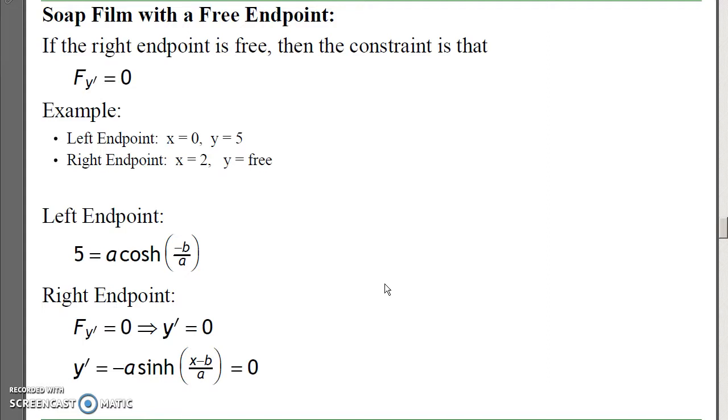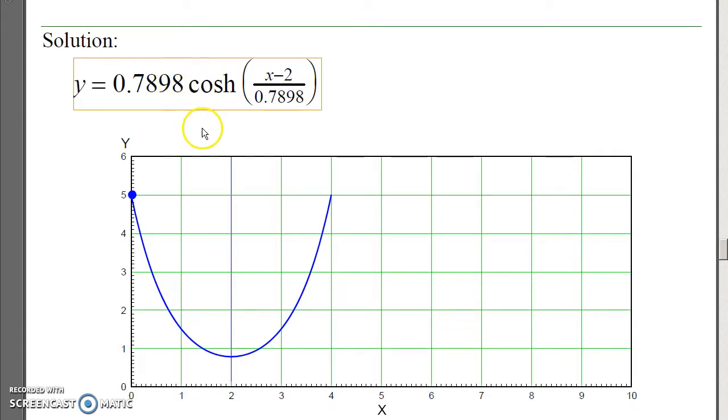Second example. If the right endpoint is free, then instead of constraining it, I have to satisfy the second part of the Euler-Lagrange equation. Fy prime is 0. What that means is taking your function of y, take the derivative with respect to y prime, that means that y prime equals 0 at the right endpoint. So my two equations for two unknowns would be the left endpoint and the right endpoint saying that y prime equals 0, which gives you this solution. And notice what you have is at 2, I've got a surface. The soap film has to be perpendicular to the surface at the boundary condition. What it looks like is there's a mirror image of the soap film to the right, resulting in the zero slope. So that's the shape of a soap film with the right endpoint, free to move along the line of x equals 2.